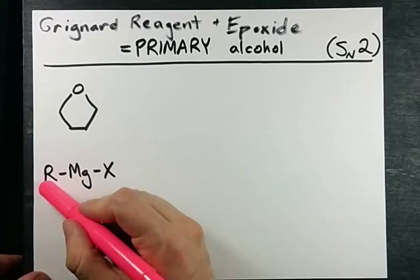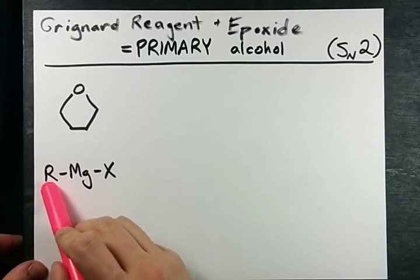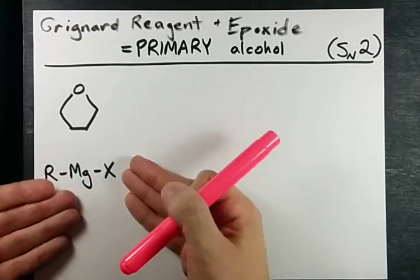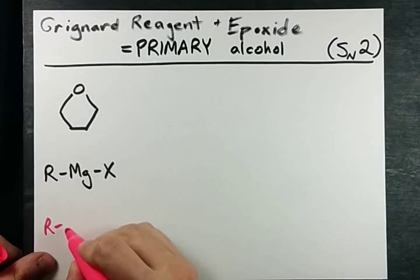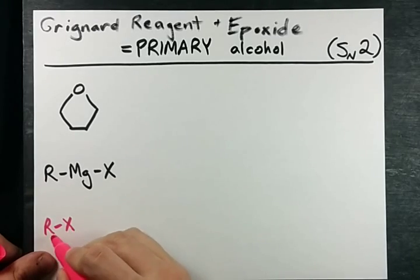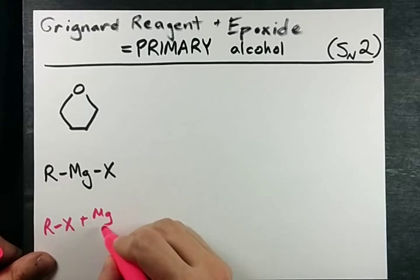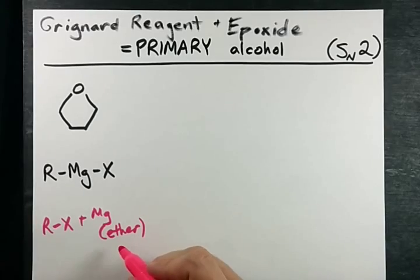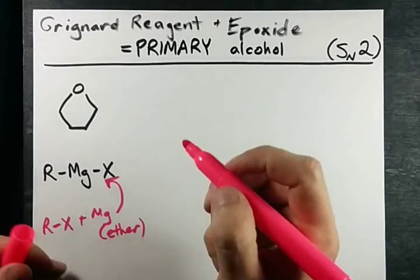Here we have our Grignard reagent — any length carbon chain connected to Mg connected to X. You make that by mixing the alkyl halide, same length carbon chain, with solid magnesium in dry ether, not water. That's how you make it.